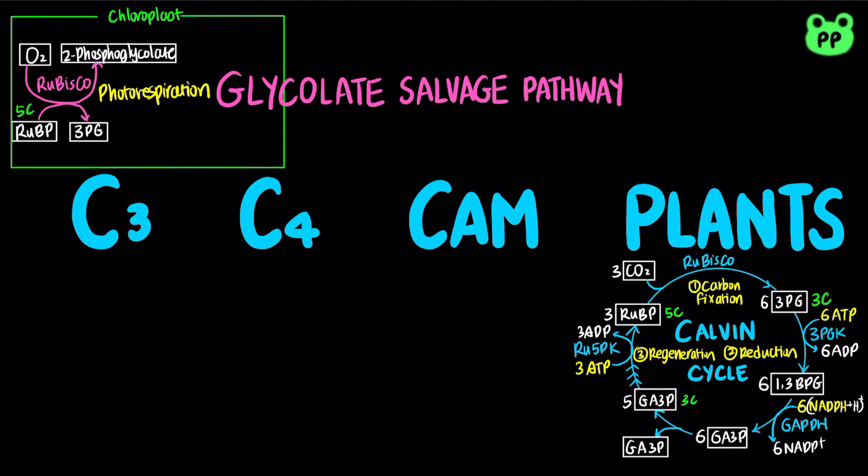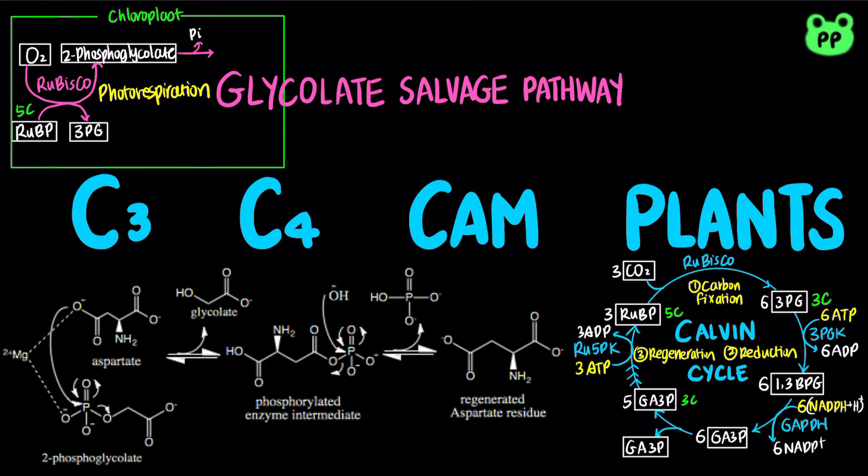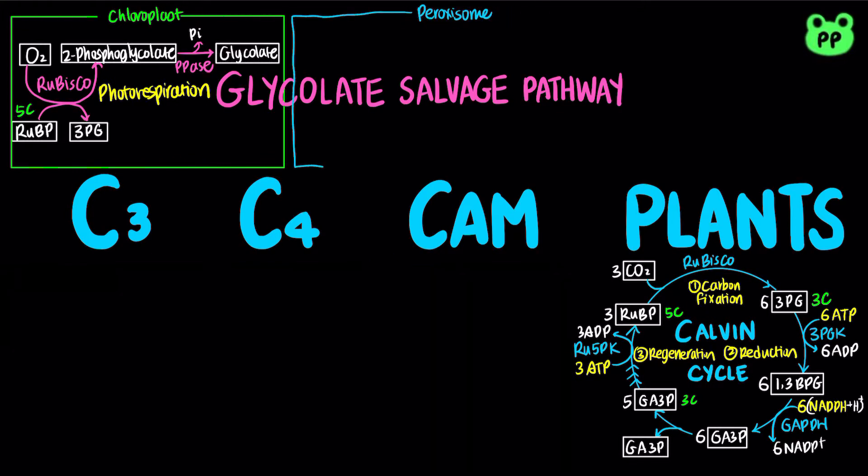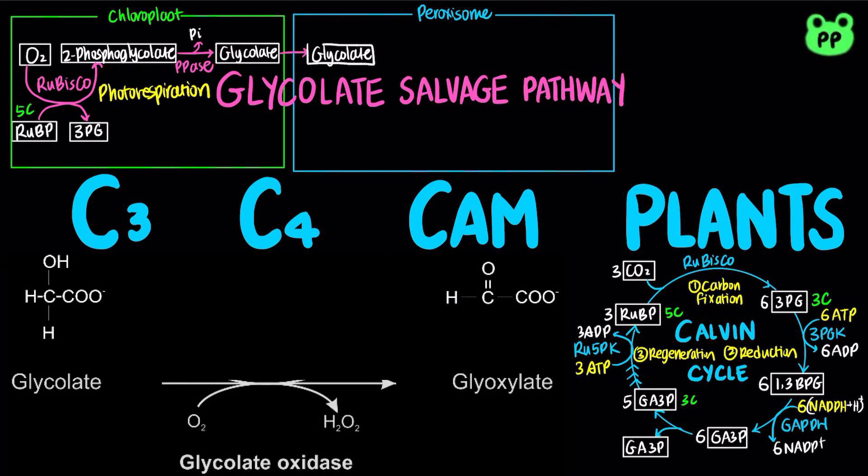First, in the chloroplast stroma, a phosphatase hydrolyzes 2-phosphoglycolate into glycolate and inorganic phosphate. Glycolate then enters peroxisome and is oxidized to glyoxylate by glycolic acid oxidase, which is coupled to a reduction of oxygen to hydrogen peroxide.